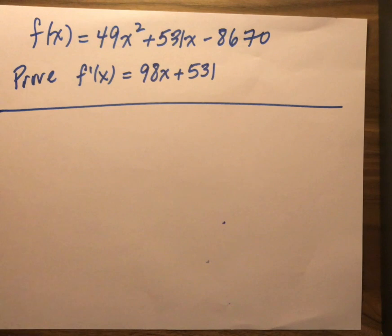to find the instantaneous rate of change at any value of x on that function. So I was given, in this problem, f of x is 49x squared plus 531x minus 8670. I'm going to prove that f prime of x is 98x plus 531.